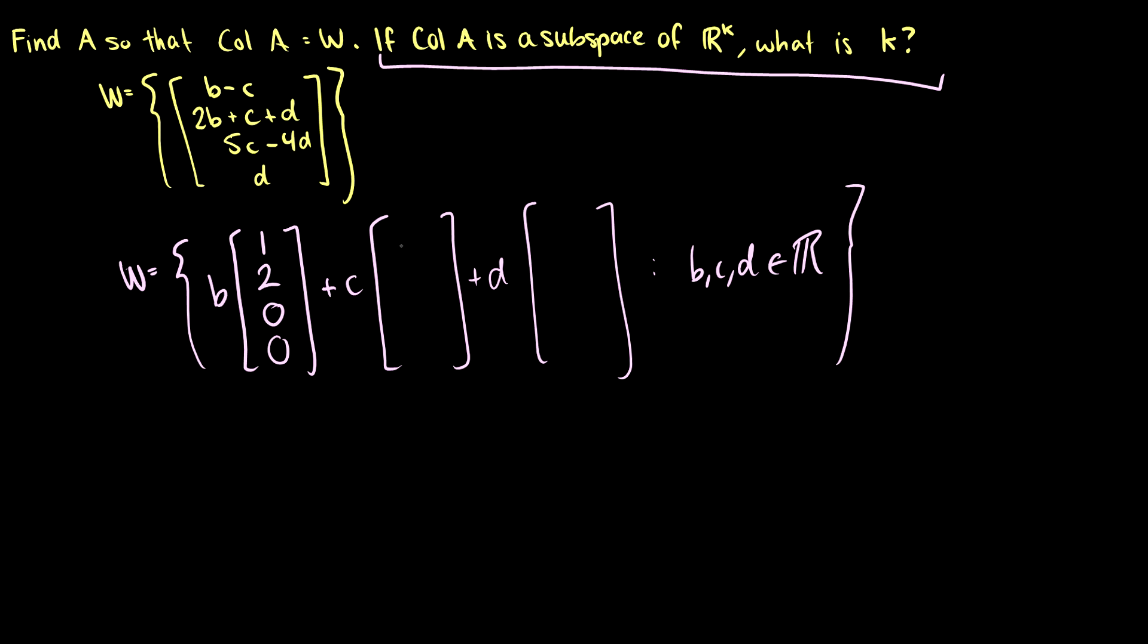Cs, we have negative 1 in the first, 1 in the second, 5 in the third, and 0 in the fourth. And for ds, we have 0 in the first row, 1 in the second row, negative 4 in the third, and 1 in the fourth row.